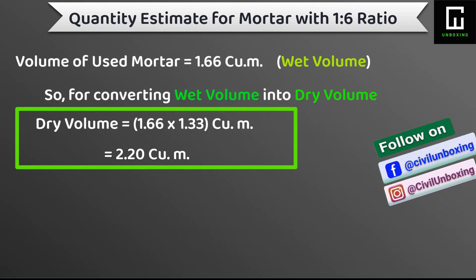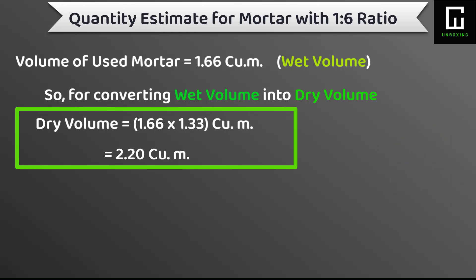Remember, the constant 1.33 is used because in dry volume of cement and sand there must be presence of air voids in between the particles. That is why the increment of volume occurs in dry condition. When we place the mortar at a brick wall, that dry mortar is mixed thoroughly with water and the voids get vanished, so the wet volume gets decreased. I hope you got the concept.